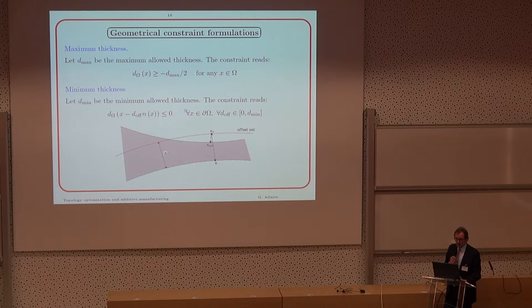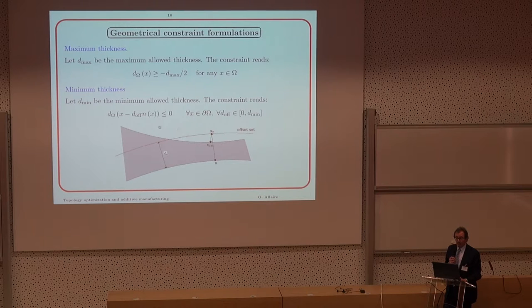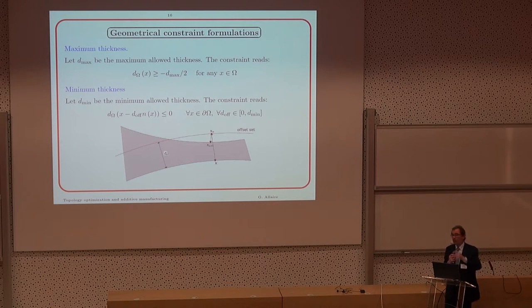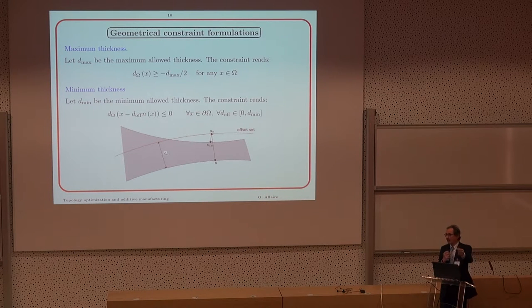Minimal thickness would be a bit more complicated. Here is a gray structure. Minimal thickness, you start from a point x on the boundary. You move inside, in the direction opposite to the exterior normal, up to a distance d_off. Then you compute is the signed distance positive or negative. If it is negative, you are inside the structure. If it is positive, you are outside. In my picture, you are outside. That means that the constraint is violated. The constraint is that for every point on the boundary, if you move inside by a distance d_off, you should still have a negative signed distance. And then d_off is any parameter between 0 and d_min. Why not jump directly to d_min? That's because you may have two bars at a distance d_min, and so you jump over the hole, you don't see it.